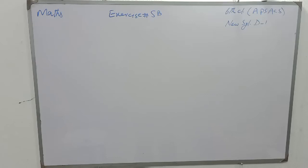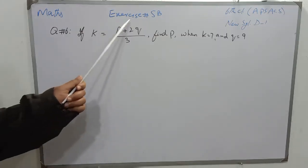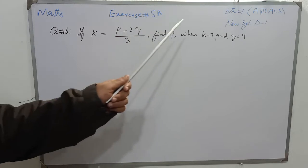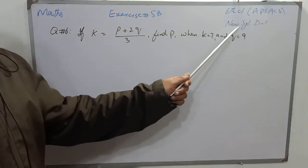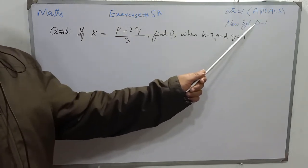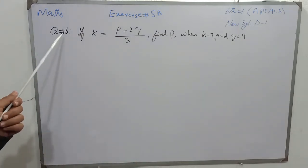Starting with the name of Allah Almighty, who is the master of the Day of Judgment, and the blessings of the Prophet Muhammad Sallallahu Alaihi Wasallam. Students, Exercise 5B Mathematics, Class 6, New Scholars Mathematics D1.